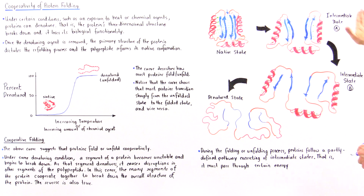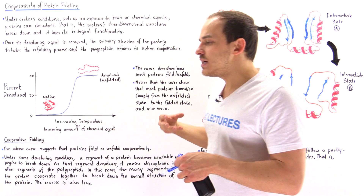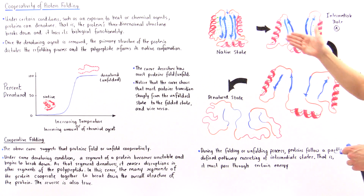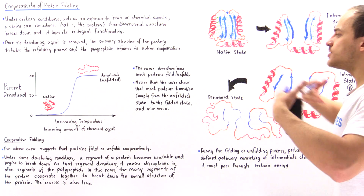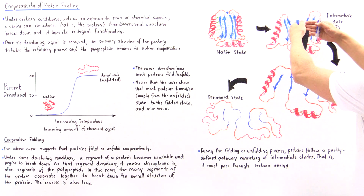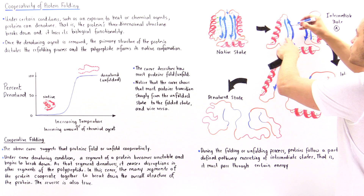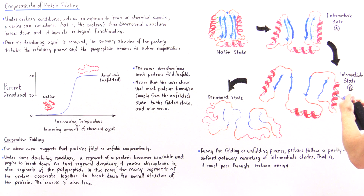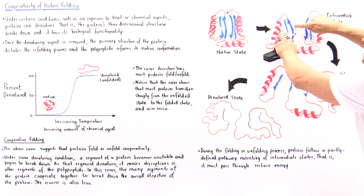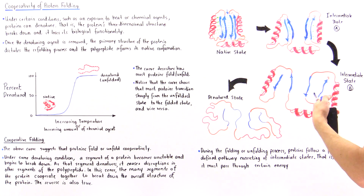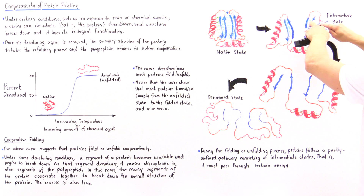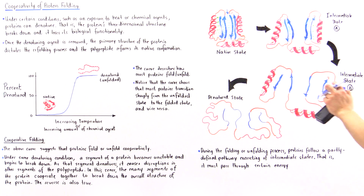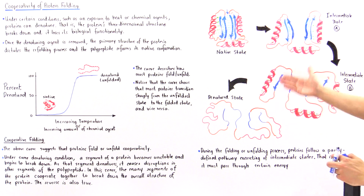In intermediate state A, only secondary structures remain. Continuing to increase temperature, those destabilized segments cause other segments to destabilize — the interactions between beta pleated sheets break, and the bonds between beta sheets and alpha helixes break as well. This gives us intermediate state B, which contains only the secondary structures: the four beta pleated sheets and three alpha helixes.